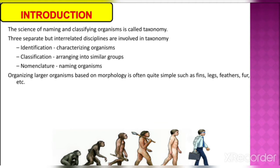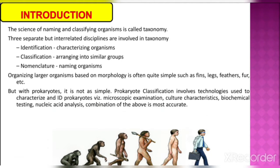Organizing larger organisms based on morphology is often quite simple — such as fins, legs, feathers, fur, etc. But with prokaryotes it is not that simple. Prokaryotic classification involves technologies used to characterize and identify prokaryotes with respect to microscopic examination, cultural characteristics, biochemical testing, nucleic acid analysis — and a combination of the above is most accurate.